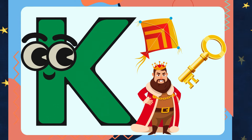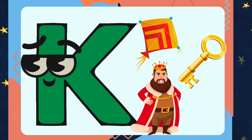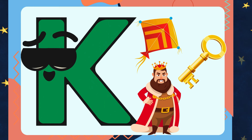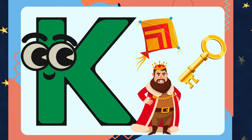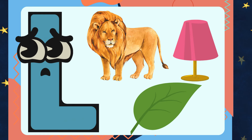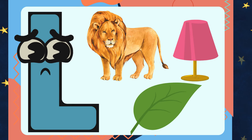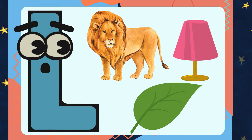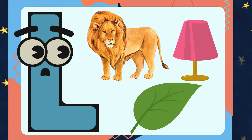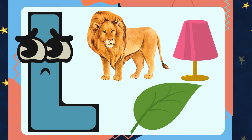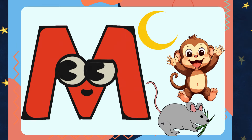K is for Kite, King. L is for Lion, Lamb, Leaf.